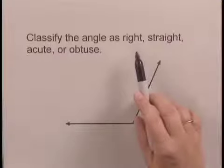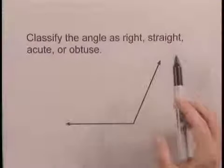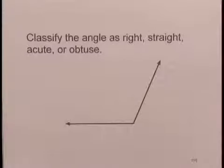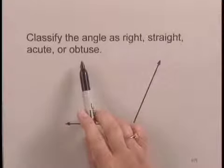A right angle is an angle that measures 90 degrees. A straight angle measures 180 degrees. An acute angle measures less than 90 degrees. And an obtuse angle measures more than 90 degrees.